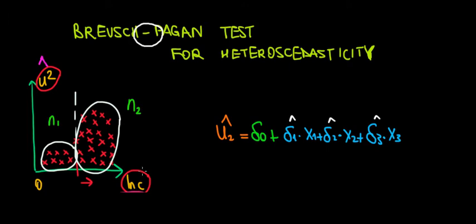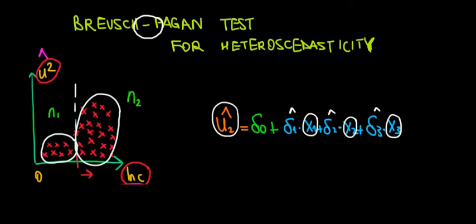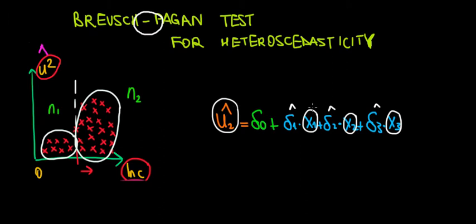In the previous video, we looked at the relationship in a one-variable regression model where we would test for the relationship between the variation in the error term based on the independent variable, and see whether that variation changes across the data. But now we want to scale that. What happens if we have more variables in the model? So instead of having just one variable, let's assume we have three independent variables. We want to see whether there's a relationship between the variation of the error term and any of those variables. If we have at least one effect from one of these variables on the variation of the error term, then we have a case for heteroscedasticity.